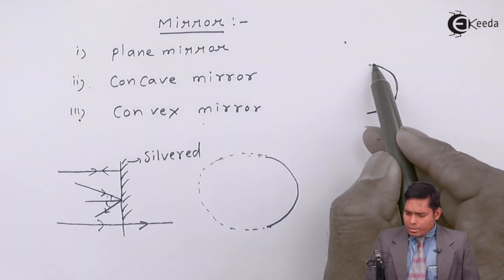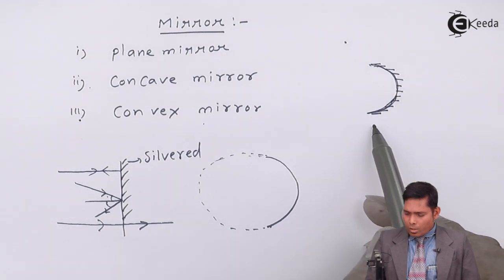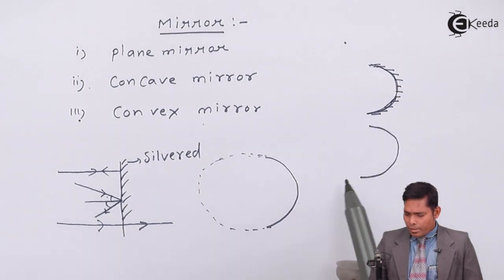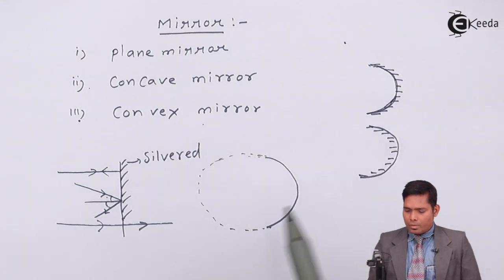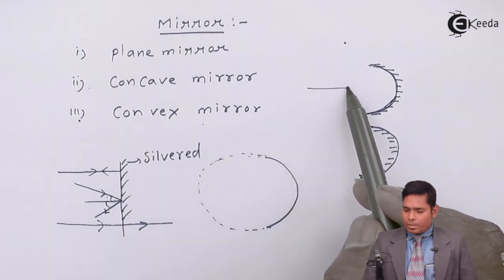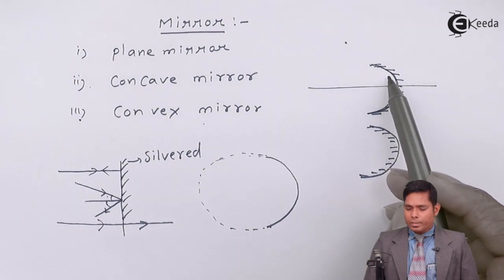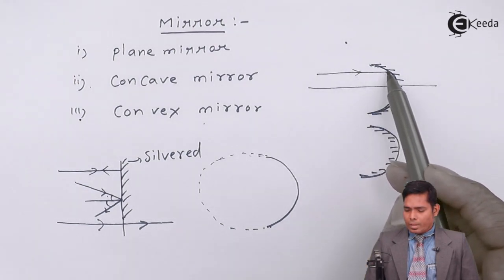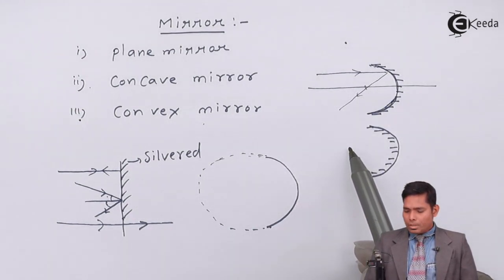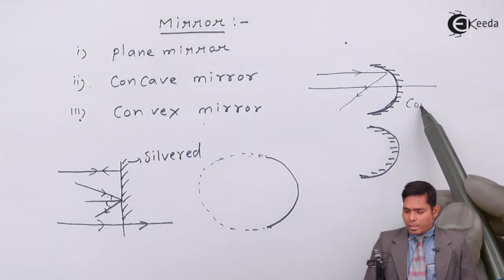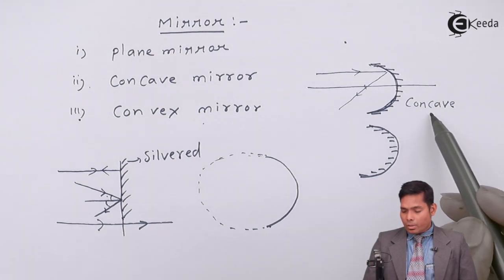If I silver this side - the inside part - this is called concave mirror. The inside part is reflecting in nature. Light falls like this and passes like that. This is your concave mirror. Concave - a cave is formed here, a cave type is formed.